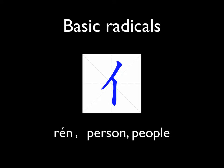Let's have a look at some basic radicals. The first one is 人, which means person or people. A lot of characters related to person or people all have this radical. For example, the characters for 'you' and 'he' — all those characters, because they are about persons.